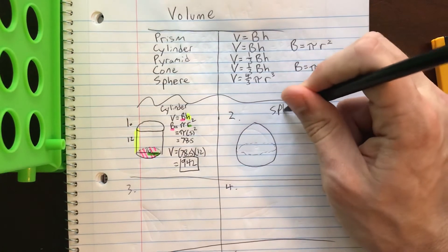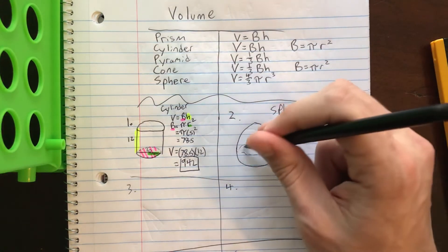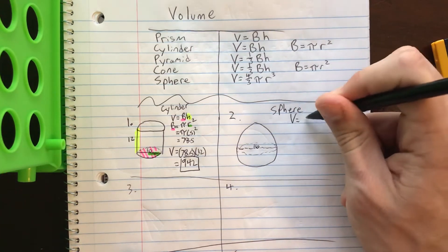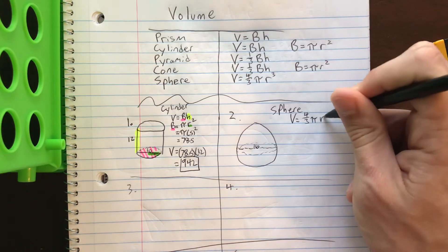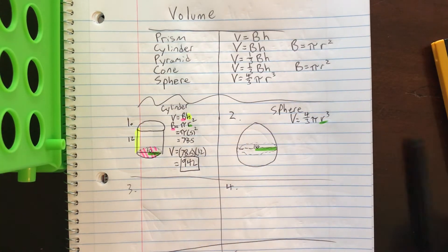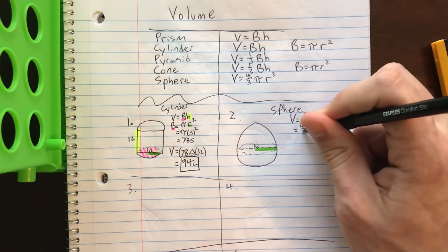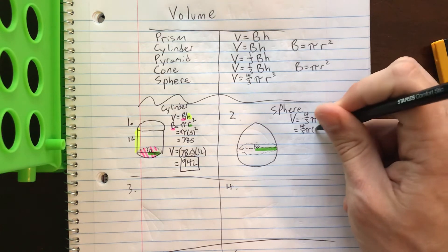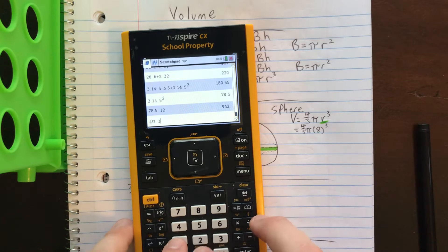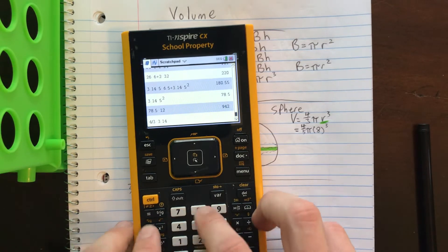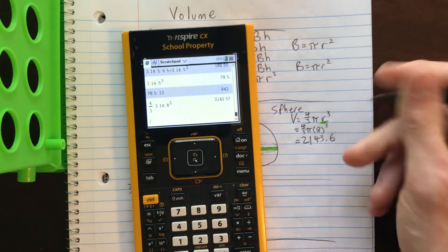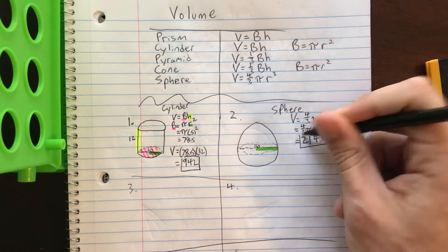Let's jump over to the sphere. This is a sphere — let's say that the full distance across is 16. Volume of a sphere is four-thirds pi r cubed. Now r should just be 8 — they gave us the diameter, so we want to make sure we use the radius. So: four-thirds times 3.14 times 8 cubed gives us 2,143.6. Spheres are pretty easy.